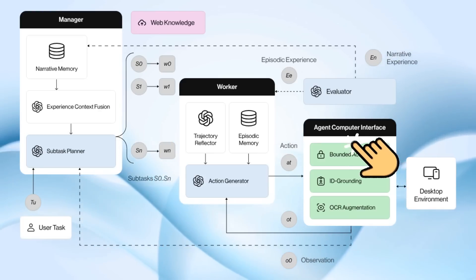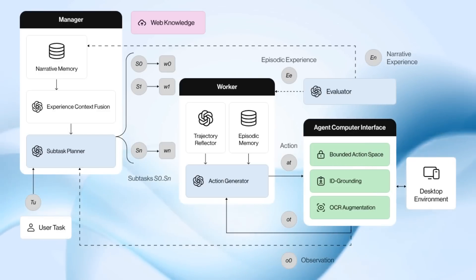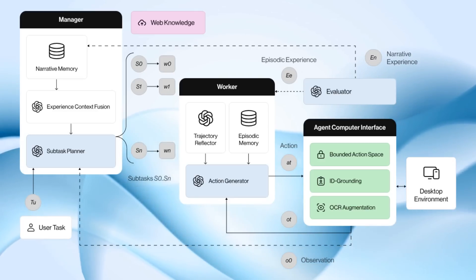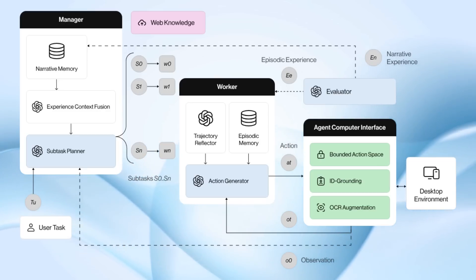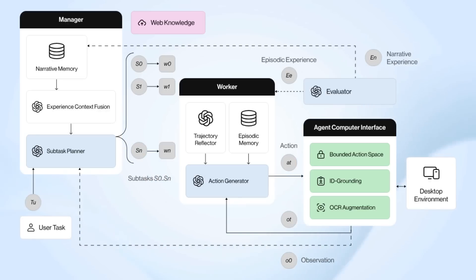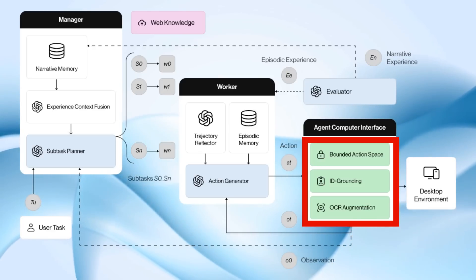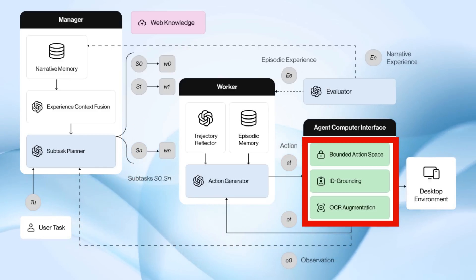Then there's the agent-computer interface. This is really fascinating because it's about how you get an agent to interact with the computer interface. They've got three things going on: a visual image input, a hierarchical structure perhaps similar to XML, and they basically ground all those things by giving them IDs. They add in OCR to be able to know exactly what's a button, what's a text field as they go through this.